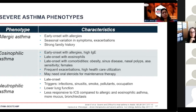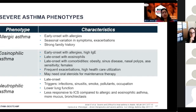Neutrophilic asthma is typically late-onset. Unlike allergic and eosinophilic asthma, the triggers are typically infections — viral or bacterial — sinus disease, exposure to smoke, or occupational sensitizers and pollutants. These patients tend to have lower lung function and are less responsive to inhaled corticosteroids. They tend to produce a lot of mucus and may even have bronchiectasis — behaving more like COPD patients.